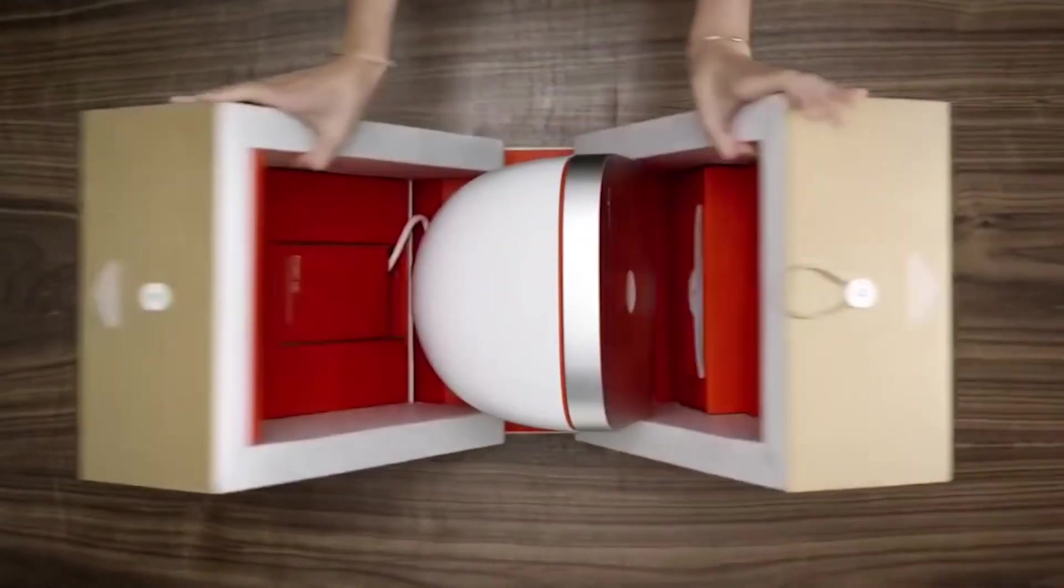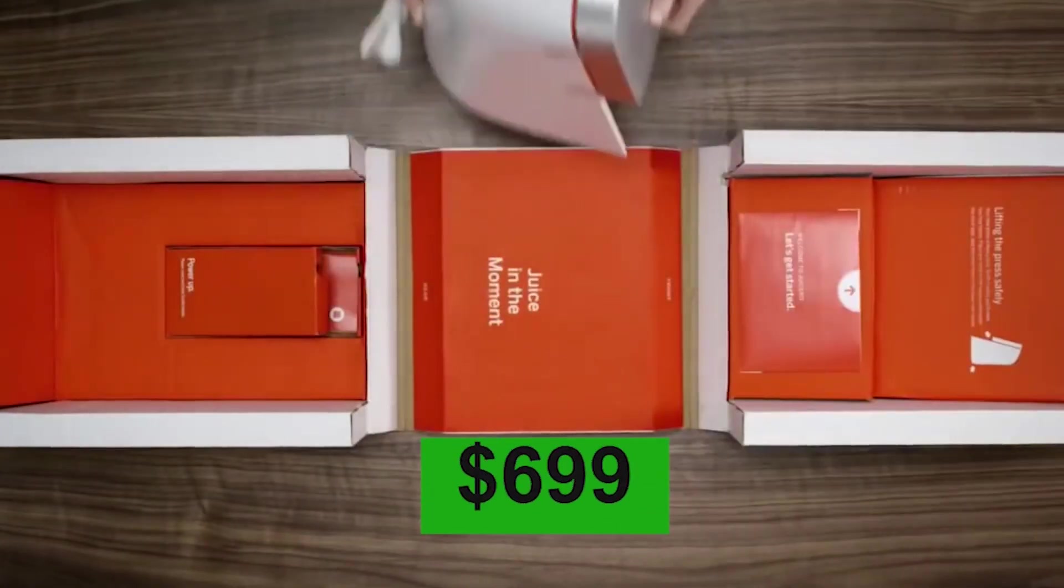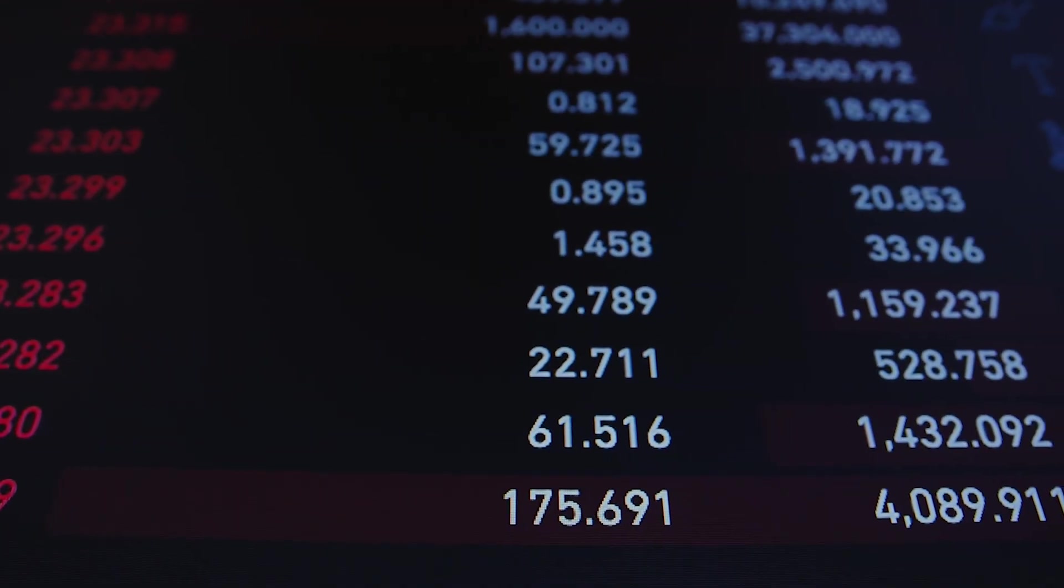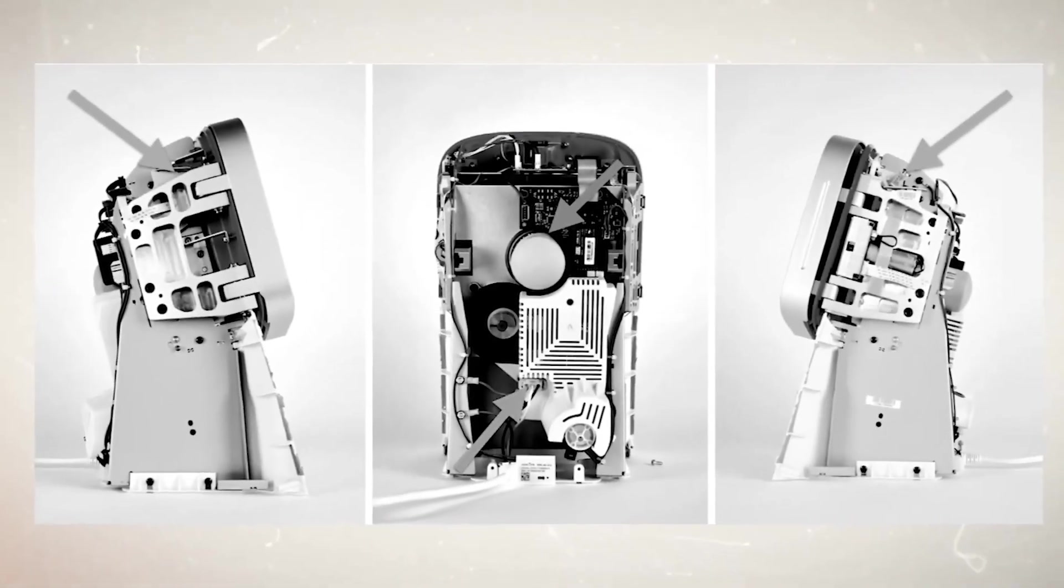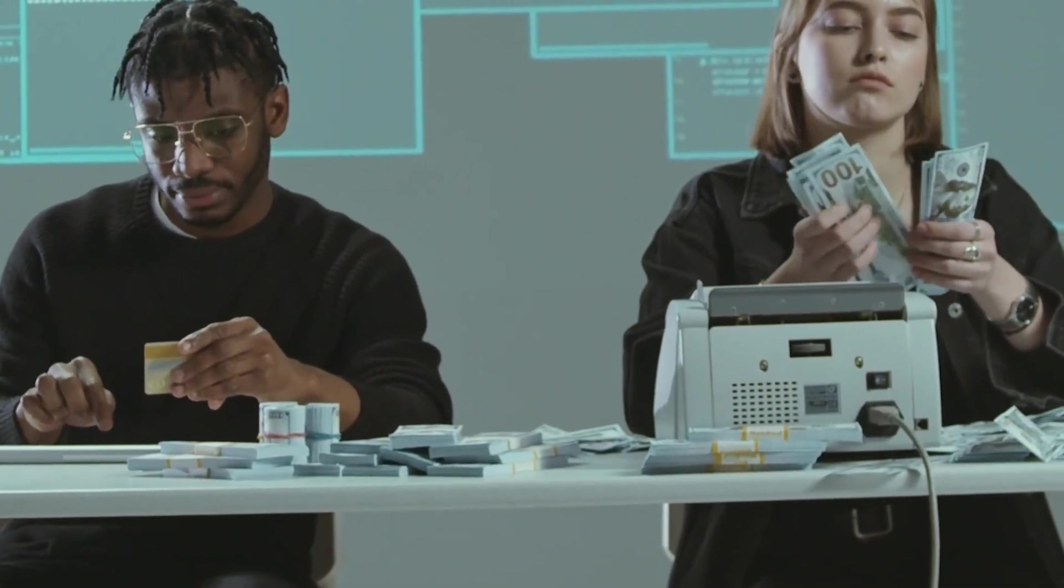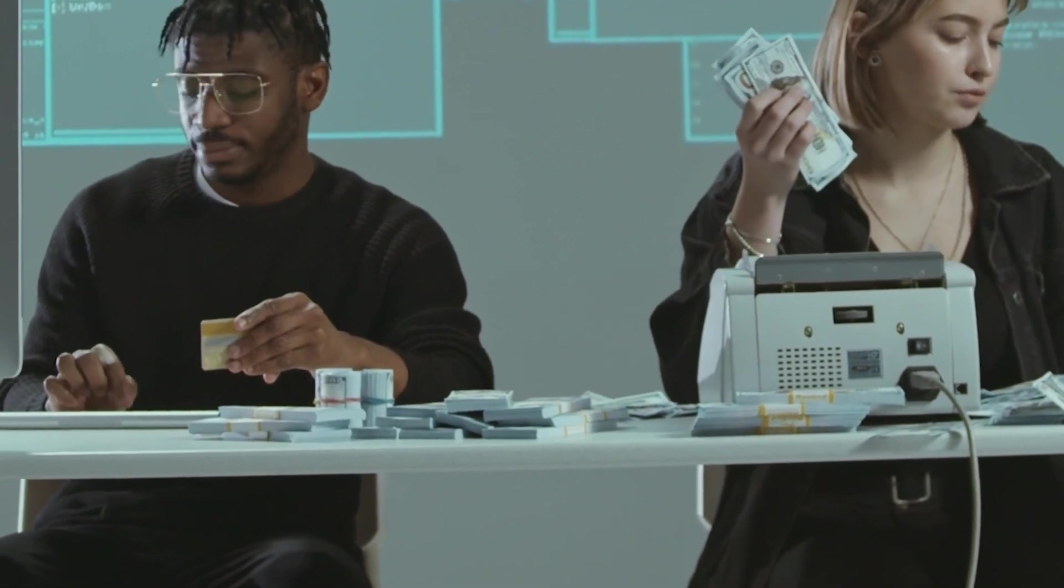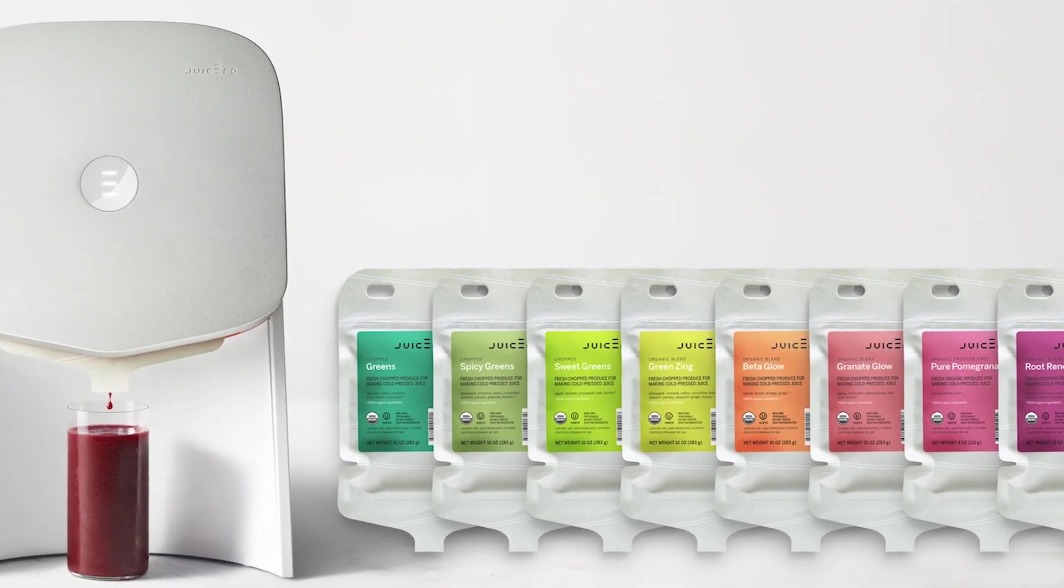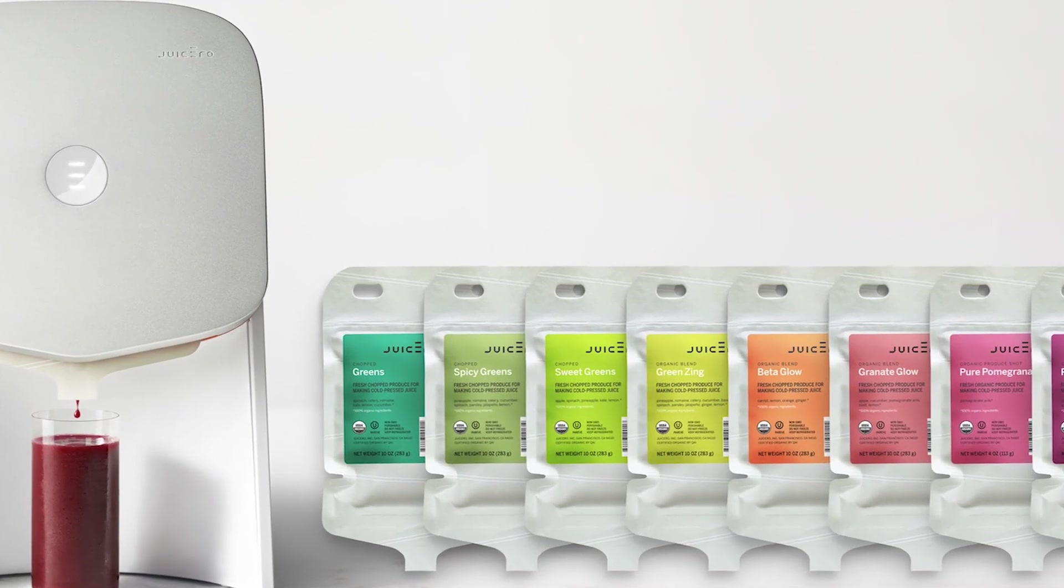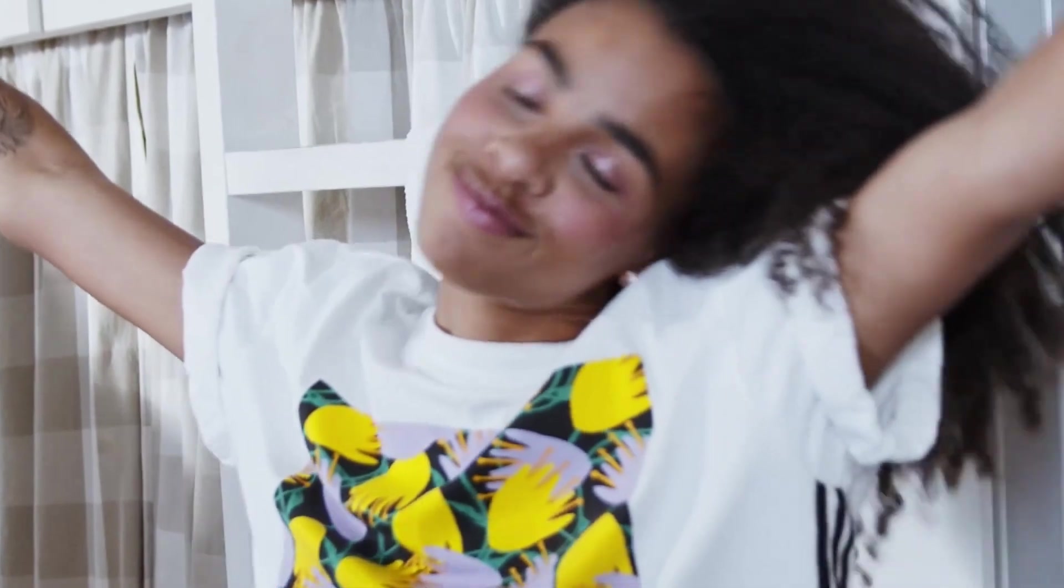When Juicero initially launched, it came with a high price tag of $699. However, the price was significantly reduced over time to make the machines more affordable. But purchasing the machine was just the start. Users also had to subscribe to a monthly service costing $5 to $8. This subscription ensured a continuous supply of fresh juice by allowing users to order new pouches. In the beginning, Juicero generated a lot of excitement.